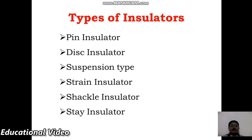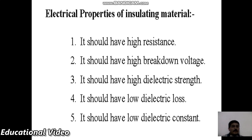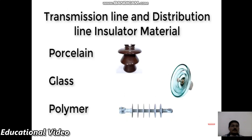The different types of insulators are: pin insulator, disc insulator, suspension type insulator, strain insulator, shackle insulator, and stay insulator. The electrical properties of insulating materials require high resistance, high breakdown voltage, high dielectric strength, low dielectric loss, and low dielectric constant.